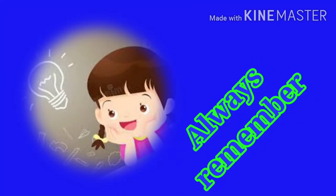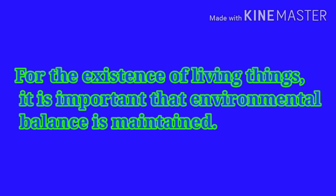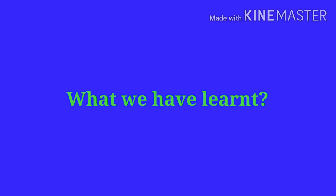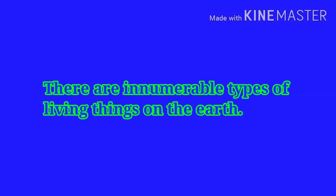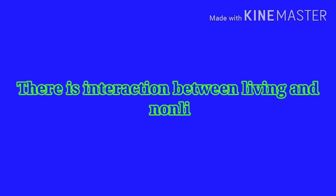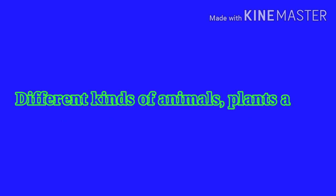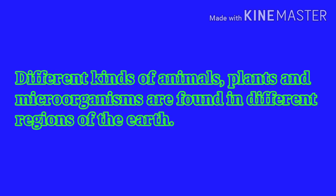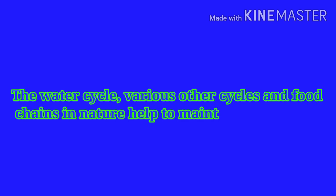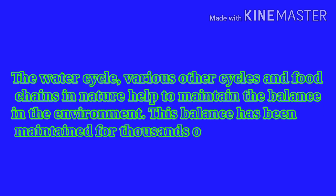Always remember: for the existence of living things, it is important that environmental balance is maintained. What we have learned: there are innumerable types of living things on the earth. There is interaction between living and non-living things in the environment. Different kinds of animals, plants, and microorganisms are found in different regions of the earth. The water cycle, various other cycles, and food chains in nature help to maintain the balance in the environment. This balance has been maintained for thousands of years.